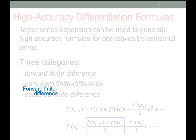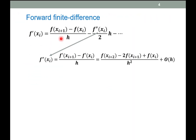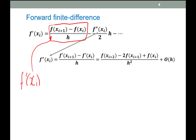Looking at this slide, this is the general equation. The second derivative can be derived by using the same equation we see here, but instead of using the function, we're using the derivative of the function. So for example, f prime of x_i — this is actually the same as what we see up here. The derivative at x_{i+1} would be expressed using the forward finite difference at that point.